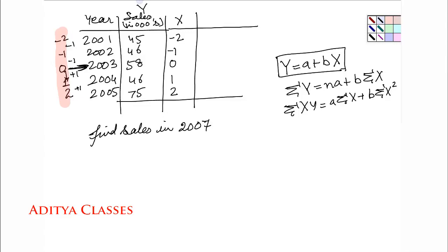Let us go ahead and find these values. I already have x, I already have y. I need an xy and then I need an x square also. 45 multiplied by minus 2 would be minus 90, 46 multiplied by minus 1 is minus 46, 58 multiplied by 0 is 0, 64 multiplied by 1 is 46, and 75 multiplied by 2 is 150. Then I need x square: 4, 1, 0, 1, 4. Let me find out summations of all these values. Summation of x square becomes 10, summation of xy is 60, summation of x is 0, and summation of y is 270.